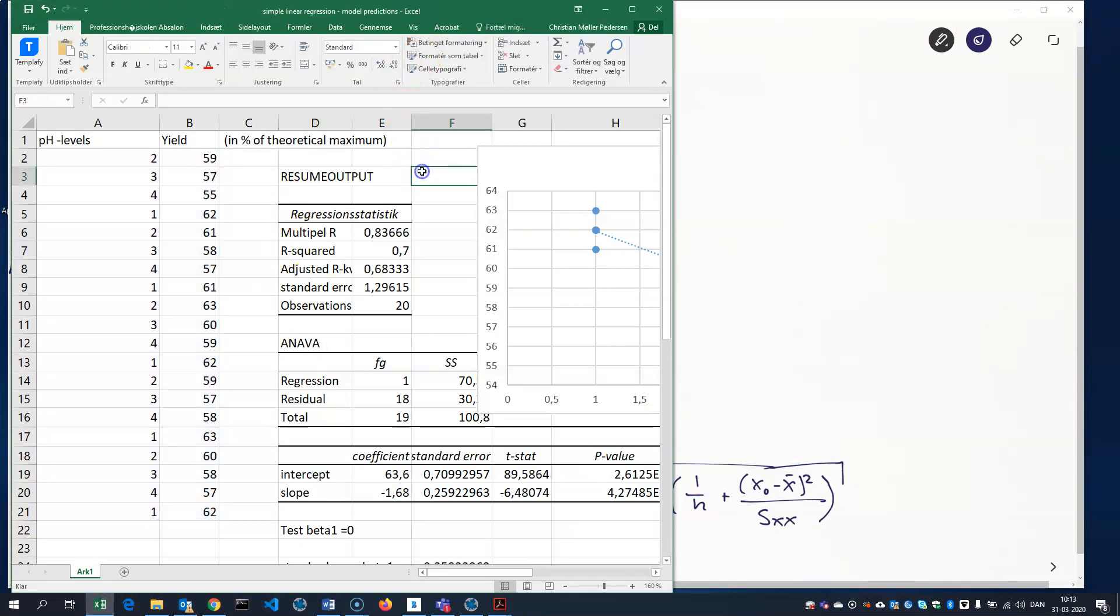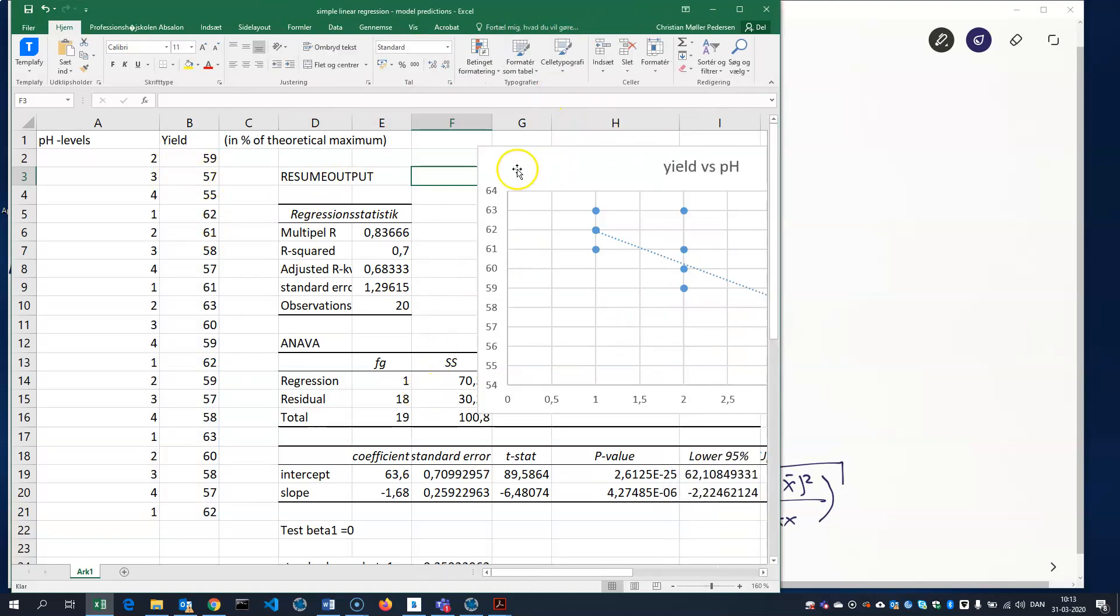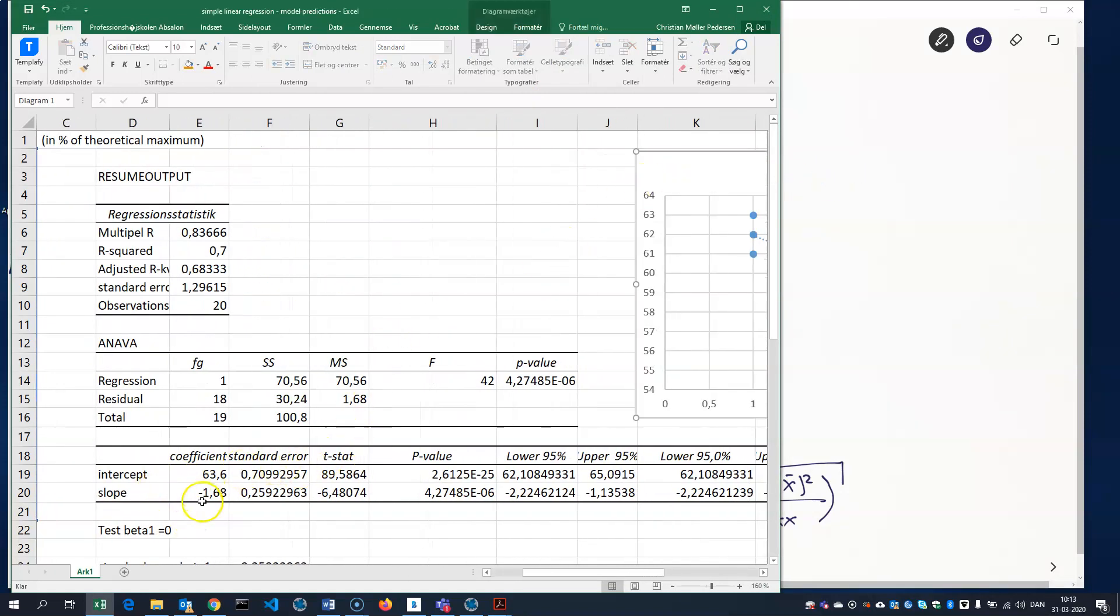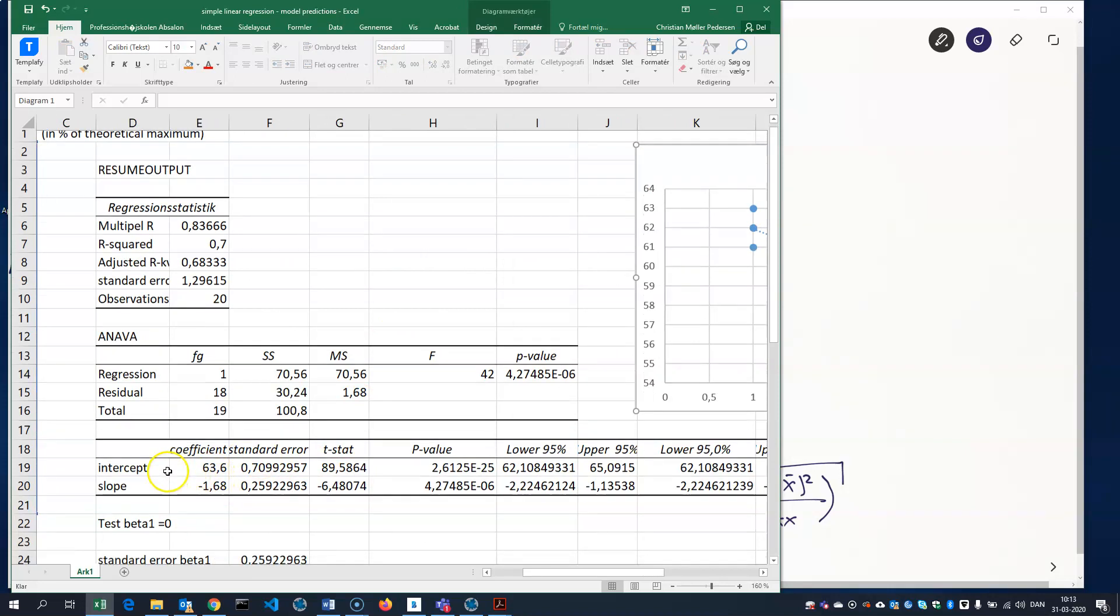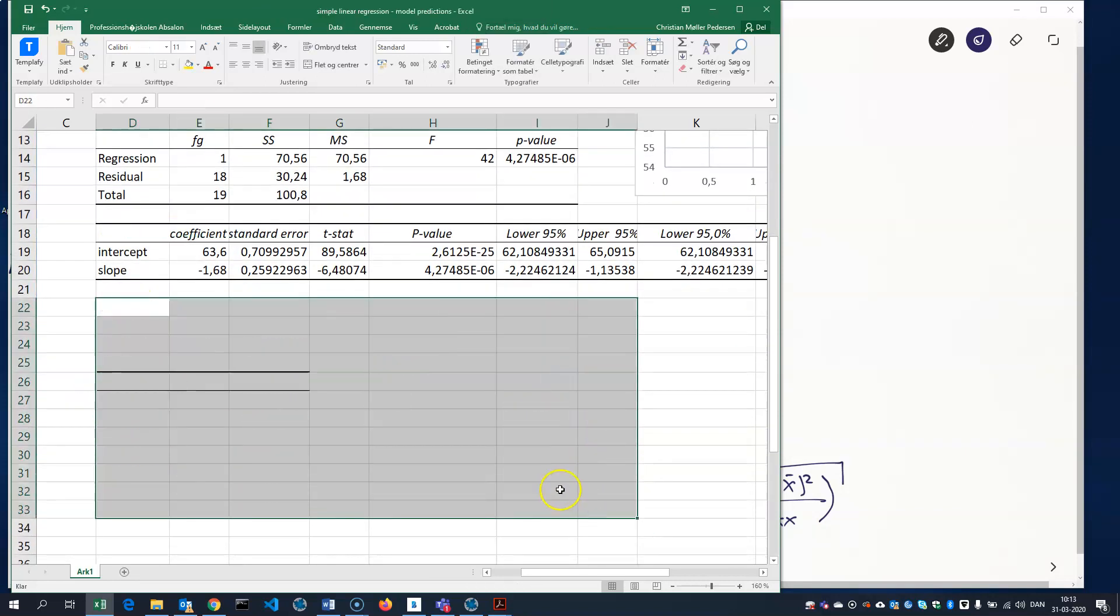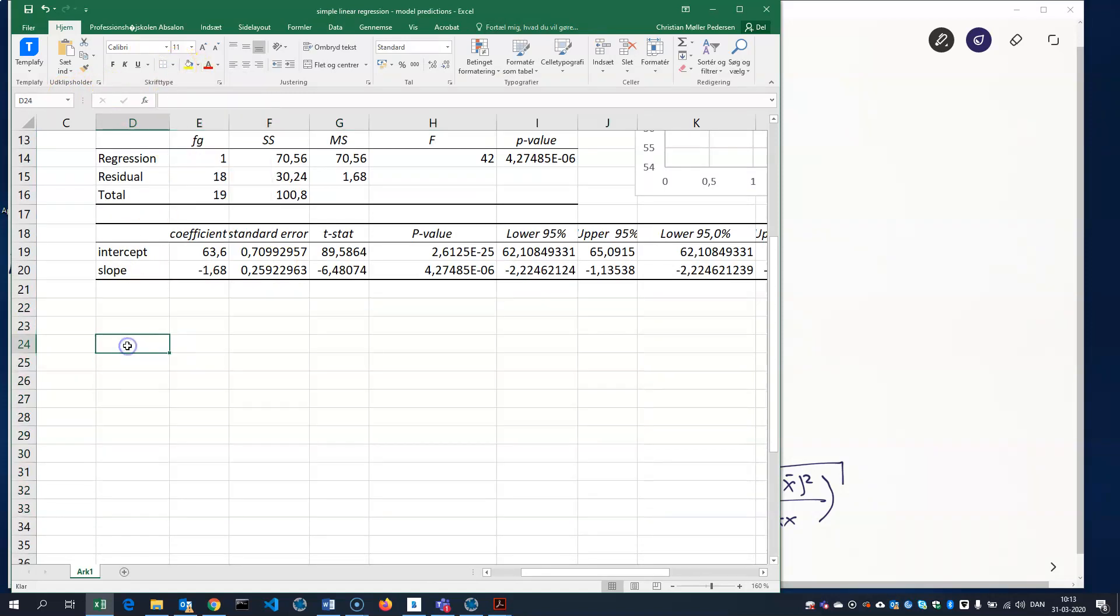So, here we have our example with the pH levels and the yield. And we did the statistical analysis here. We have the graph here. And as you can see, there is a slope of minus 1.68. And we have an intercept here. I'll just remove this. We don't need this. So, let's try to compute a confidence interval for the mean. First of all, I'll write my pH level of interest. That was 2.3.